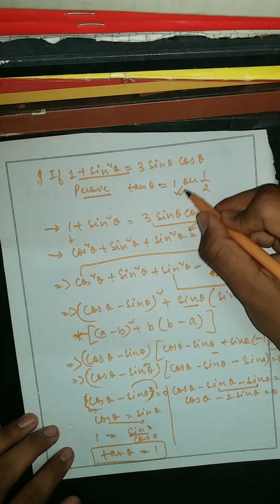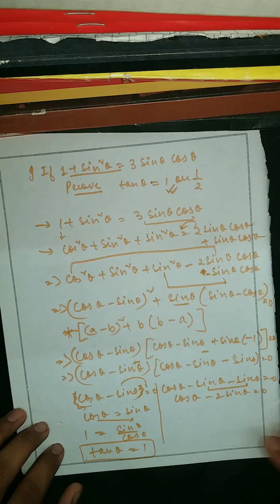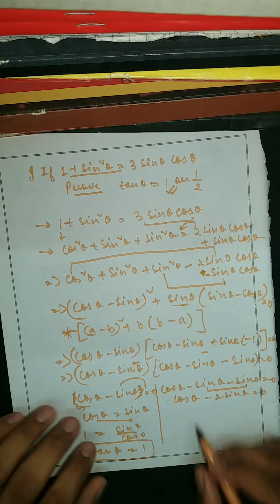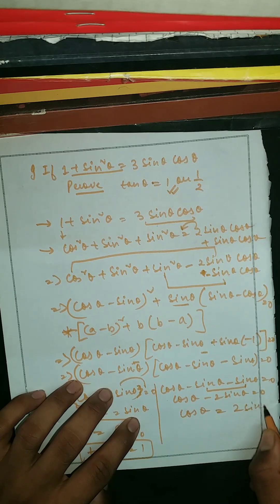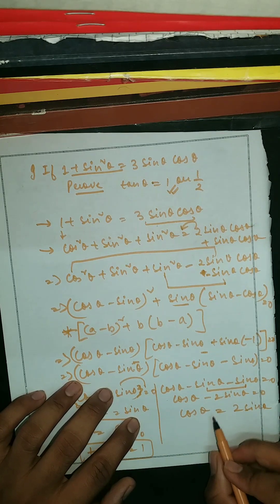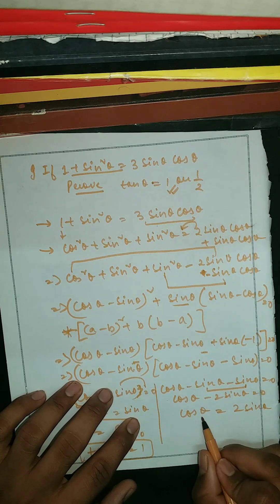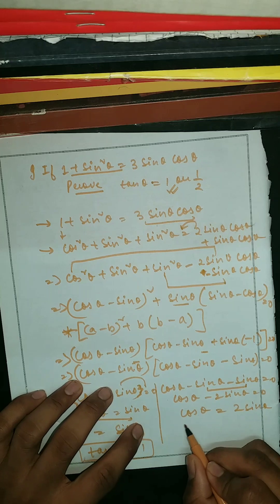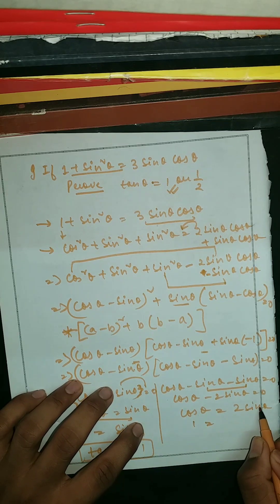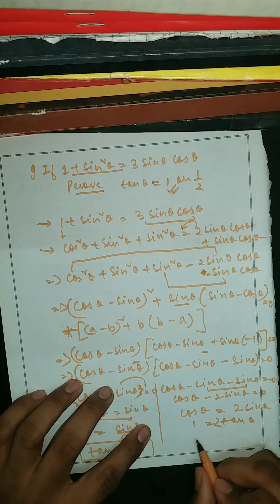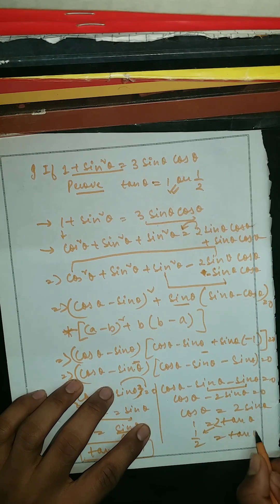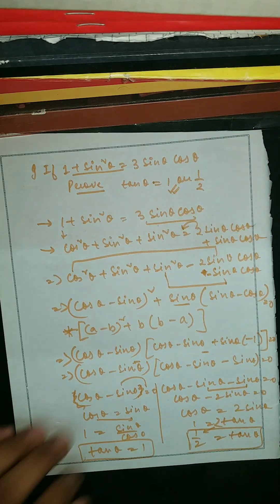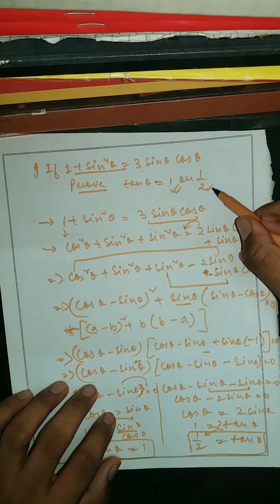For the second factor: cosθ - 2sinθ = 0, so cosθ = 2sinθ. Then sinθ/cosθ = 1/2, which means tanθ = 1/2. Hence proved — we get both results.